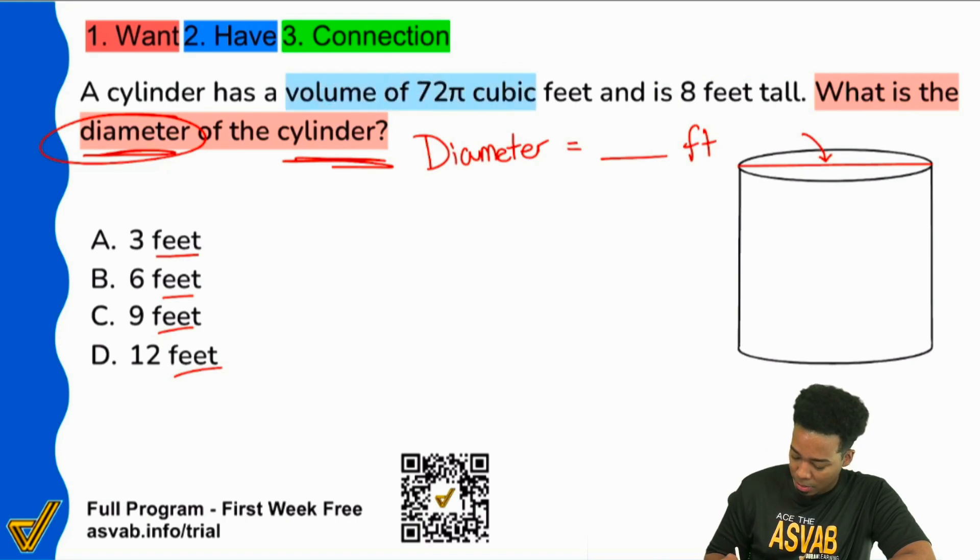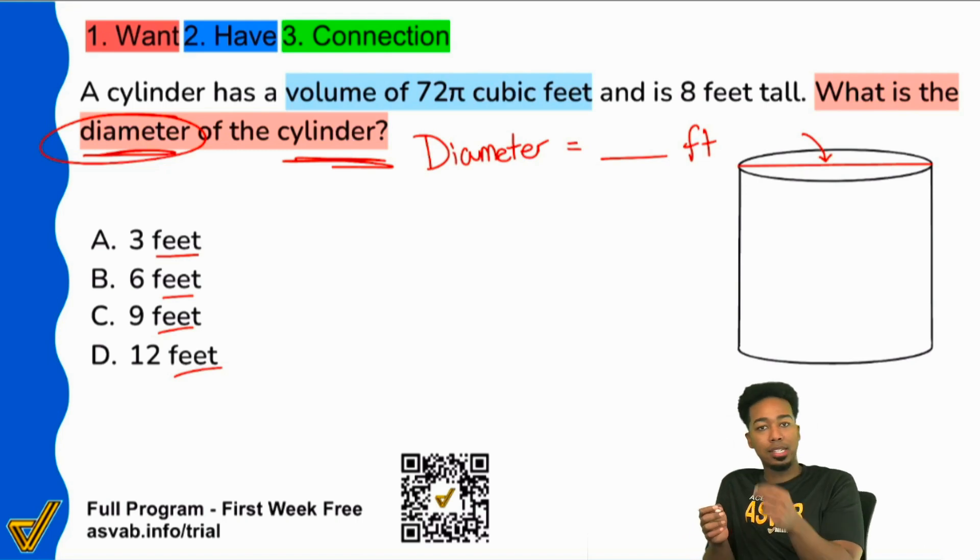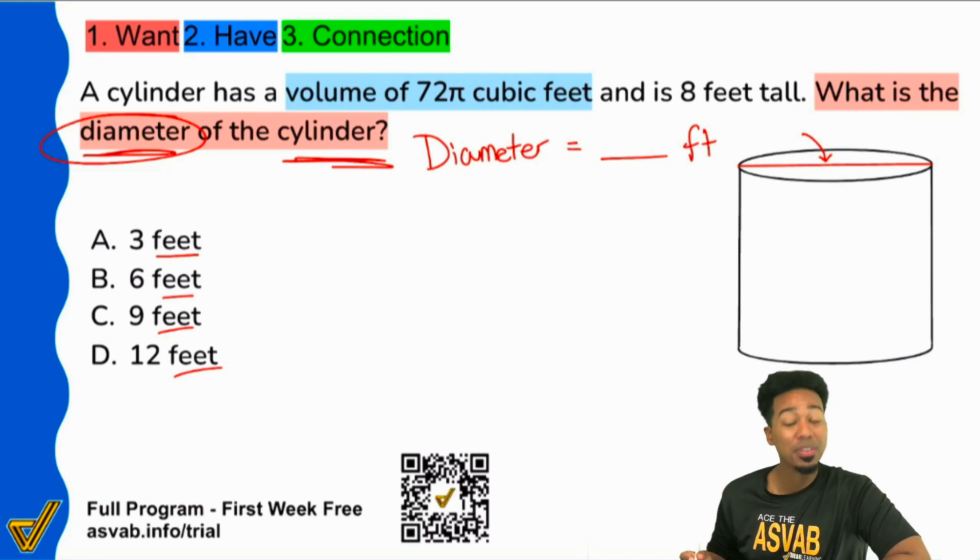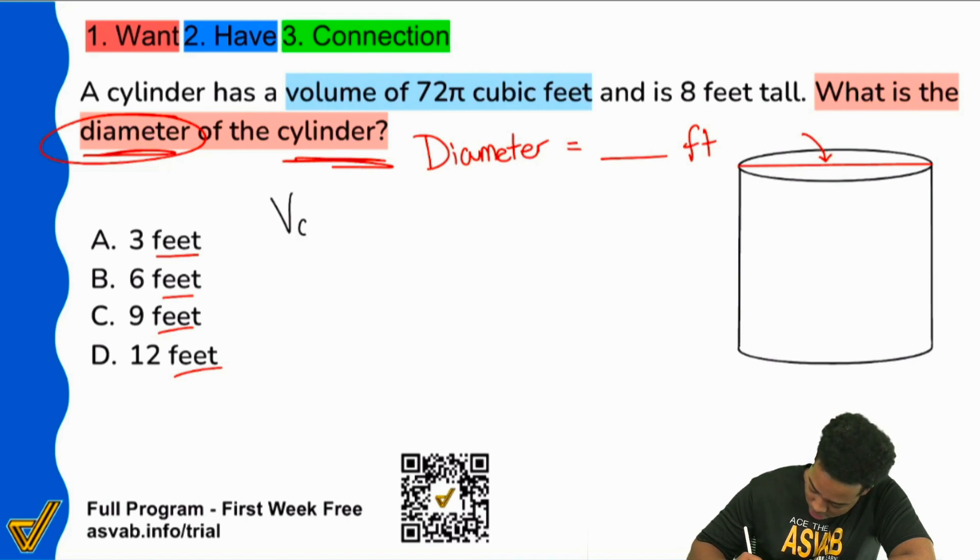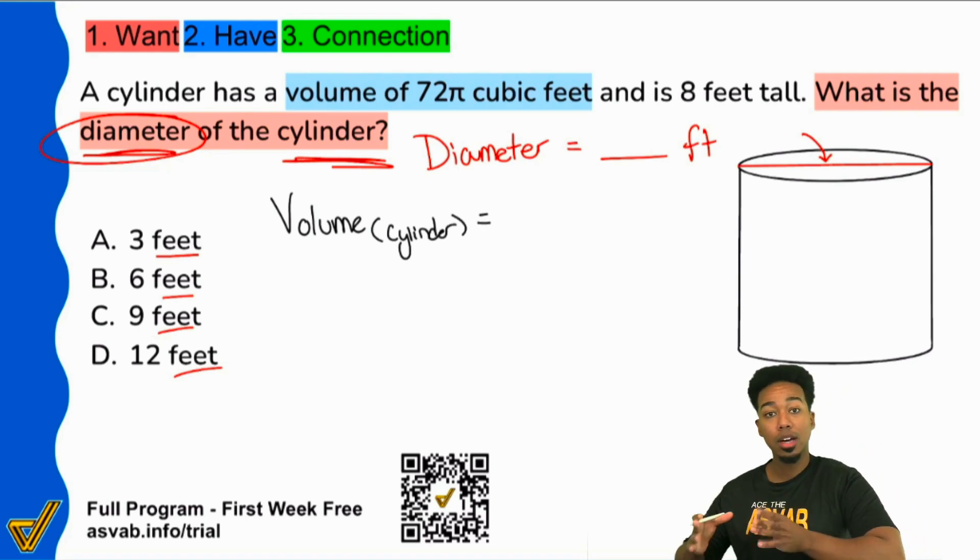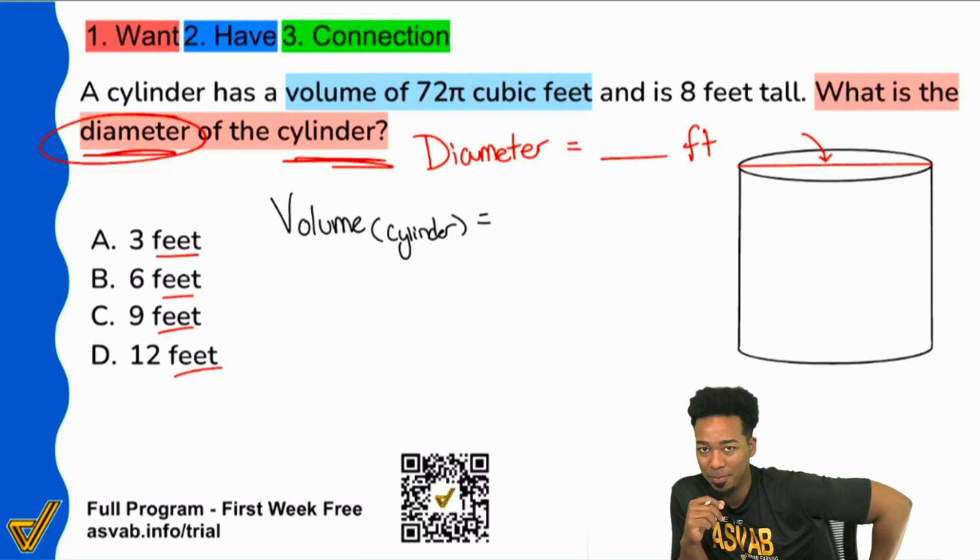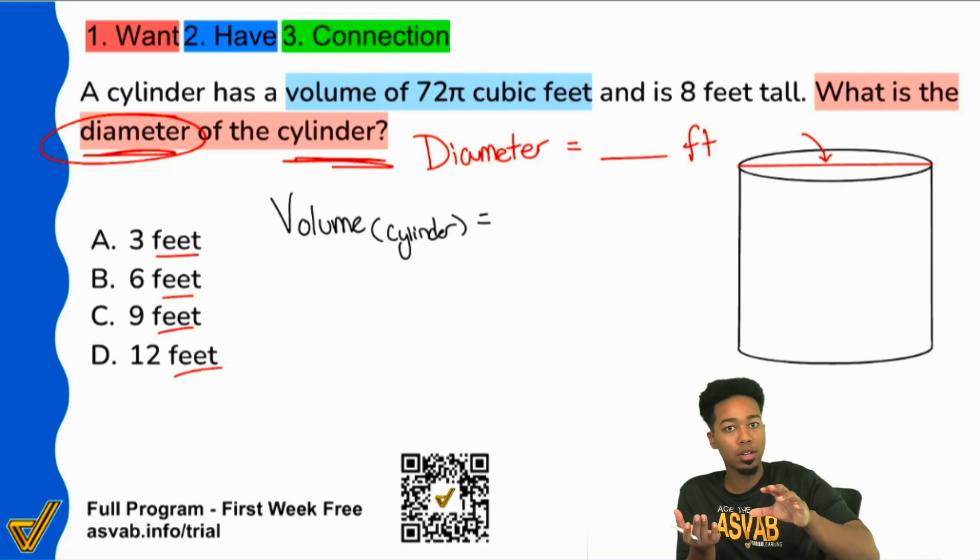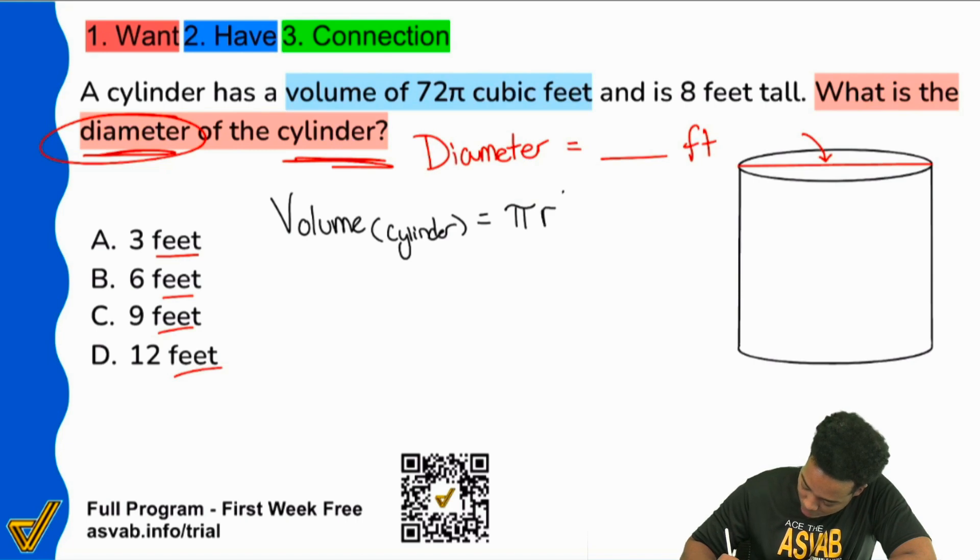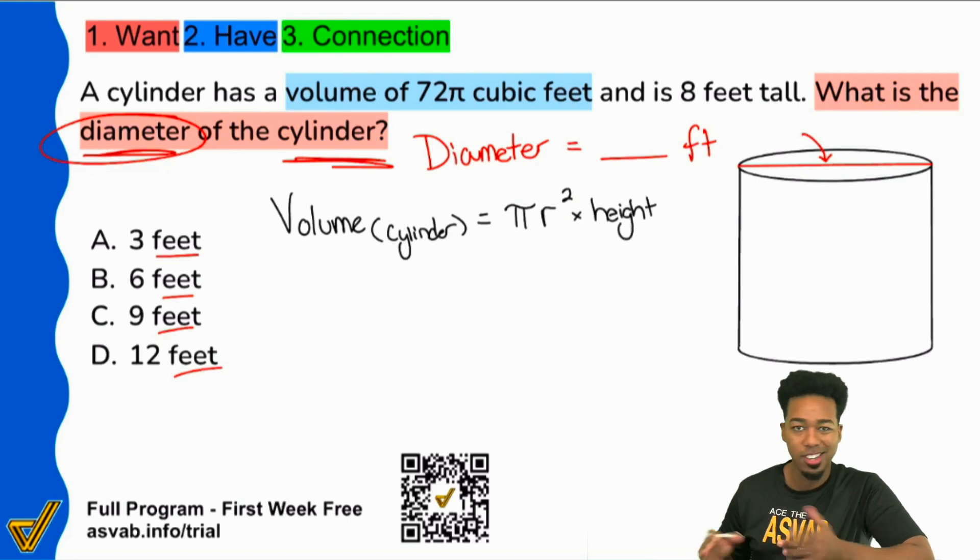The first part here is what matters most. The volume is 72π cubic feet. Instantly, whenever you see something that is formulaic, so area, perimeter, volume, surface area, you need to instantly regurgitate that information. You need to instantly be able to tell me what the formula is. The volume of a cylinder is going to be the area of the base times the height. Since the base is a circle, that area is πr². So the formula for the volume is πr² times the height.